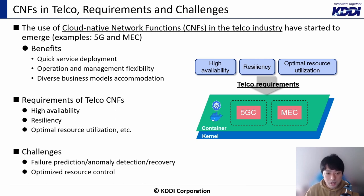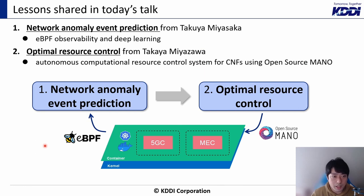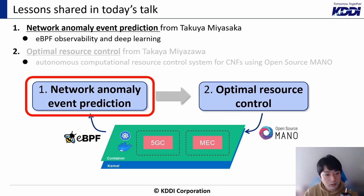To realize these requirements, there are some challenges we need to tackle. For example, to realize extremely high availability, we need to detect network anomaly events and resolve them before our customers have a bad experience. This slide summarizes our lessons shared in today's talk. In the first section, I will talk about network anomaly event prediction in the 5G network using eBPF and deep learning technology. After my talk, Takaya Miyazawa will share his experience on optimal resource control in CNF.